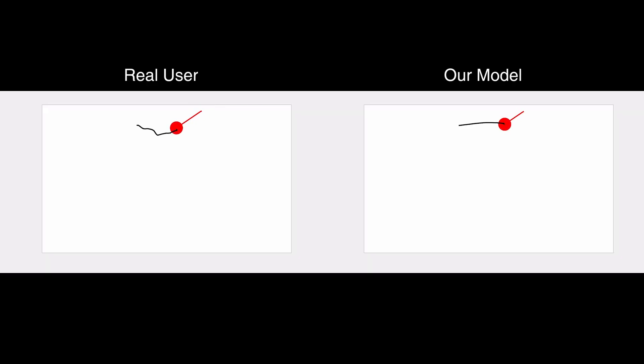In this video, the left is a real person and the right is our simulation model. Black is the cursor and red is the target.